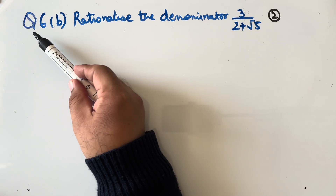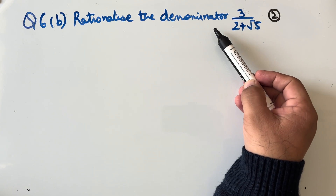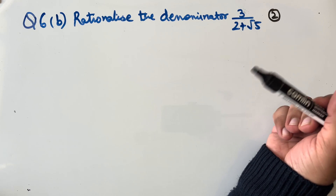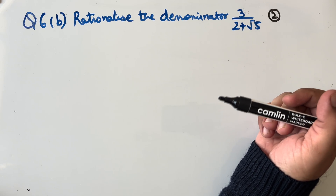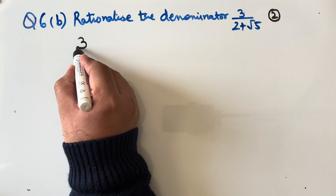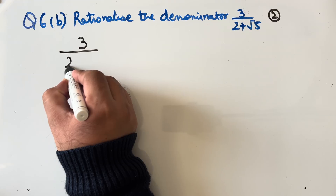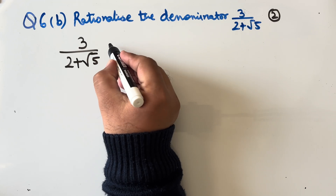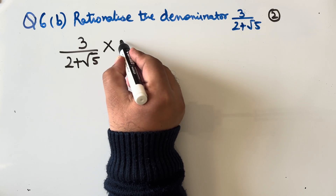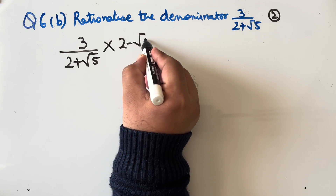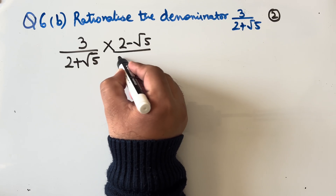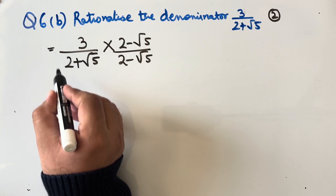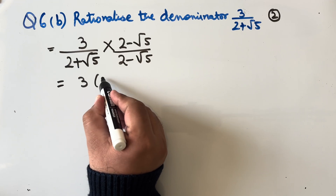Question 6b: rationalize the denominator of 3/(2 + √5). This question is worth two marks. To rationalize the denominator, we multiply by (2 − √5)/(2 − √5). In the numerator we get 3 × (2 − √5).